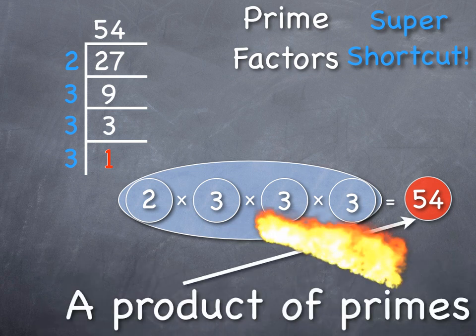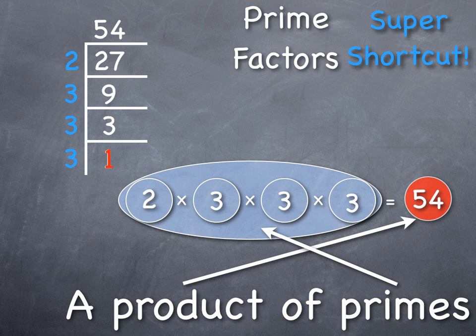You can use what I call the ladder method, I think it looks a little bit like a ladder, as a shortcut, either way works, factor trees or the ladders, up to you, as long as you can show your work and explain how you got the product of primes that you did. Up to you, you choose.